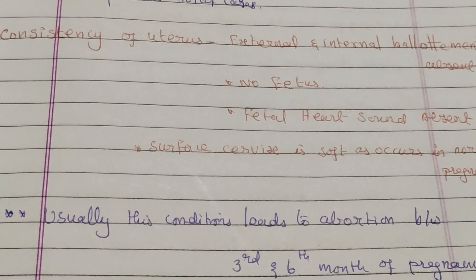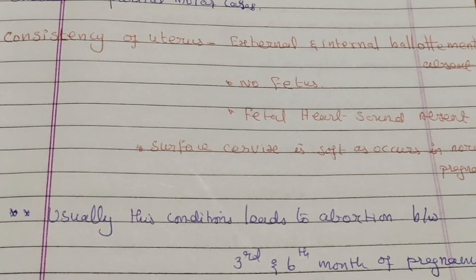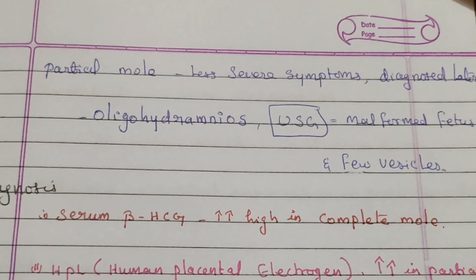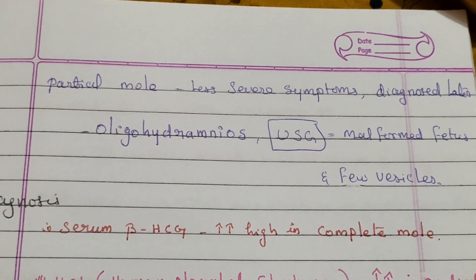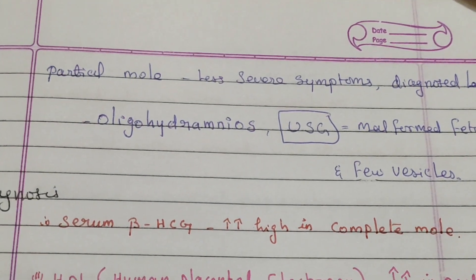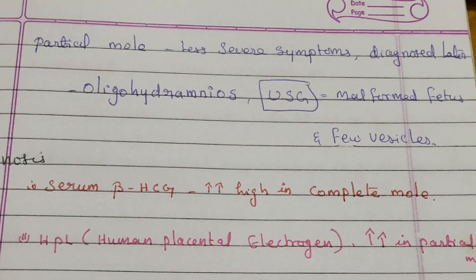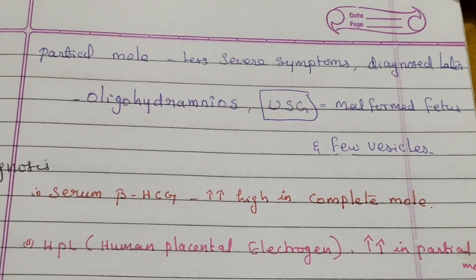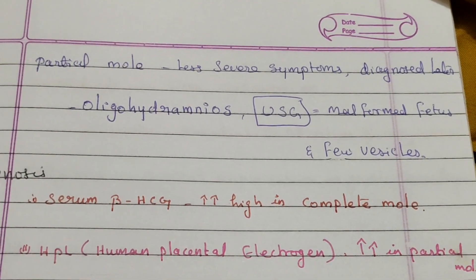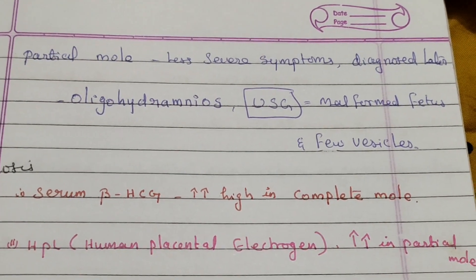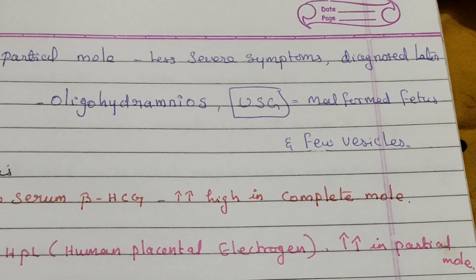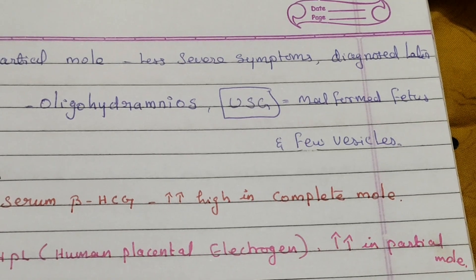An important point: the condition usually leads to abortion between the third and sixth week of pregnancy. In partial molar cases, the woman presents with less severe symptoms and is therefore diagnosed later than complete molar pregnancy. On ultrasonography, oligohydramnios and intrauterine growth retardation or a malformed fetus may be seen.